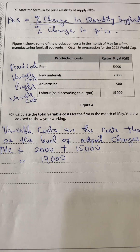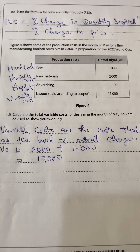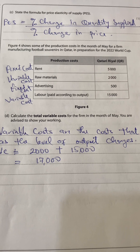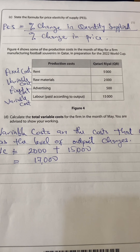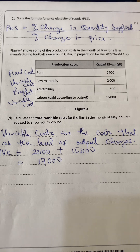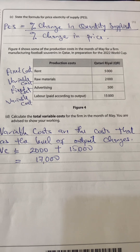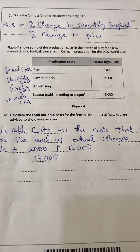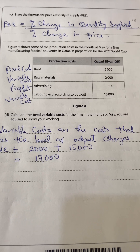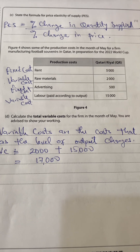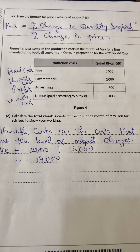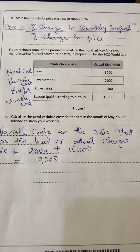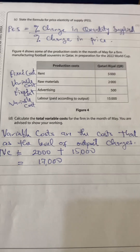Question C: state the formula for price elasticity of supply. Price elasticity of supply is the degree of responsiveness of the quantity supplied of a product as a result of a change in price. PES equals percentage change in quantity supplied divided by percentage change in price.